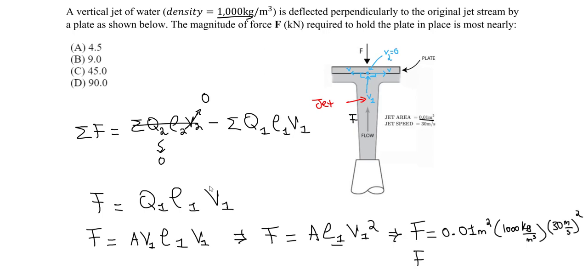And if I do my math here, let me just check the math times 1,000 times 30, I got around 9,000 newtons, which is going to be, you divide that by 1,000, so it gives us 9.0 kilonewtons. So that's our answer, and it should be B.